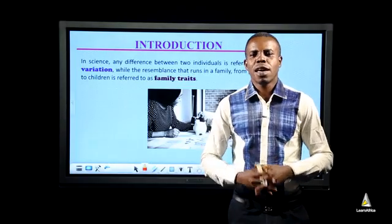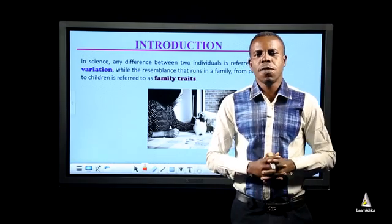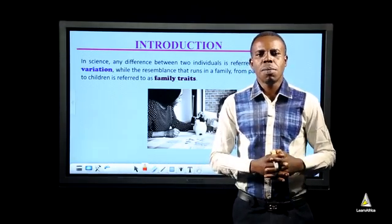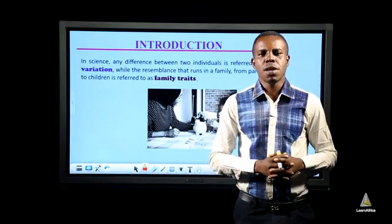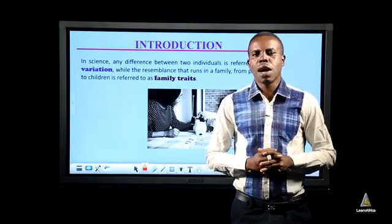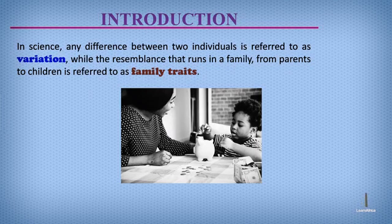In science, any difference between two individuals is referred to as variation, while the resemblance that runs in a family from parents to children is referred to as family traits. Family can simply be defined as a group of people that are related to each other and share a common ancestor. The question now is: what are traits?